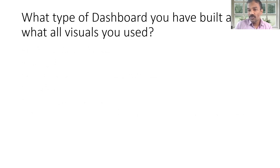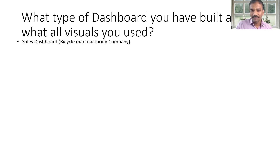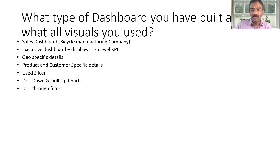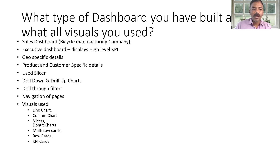What type of dashboard you have built — you can make a sales-related dashboard, a bicycle manufacturing company dashboard, an executive dashboard, or a high-level geo-specific dashboard with product and customer details. Use slicers, drill down, drill through, filters, navigation of pages, bookmarks, line charts, column charts, donut charts, multi-row cards, KPI cards, and AI-related smart features like smart narratives, KPIs, and Q&A.